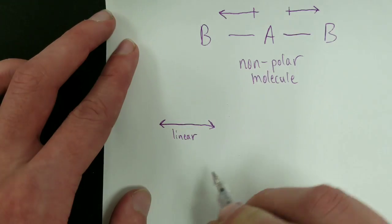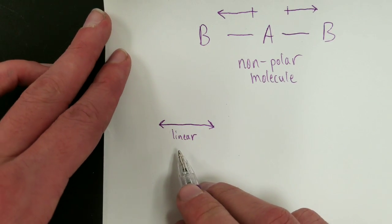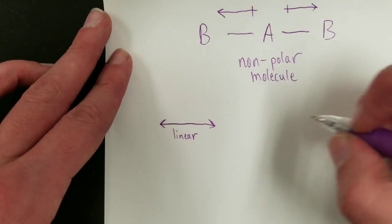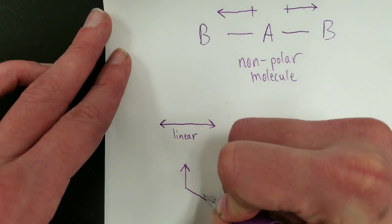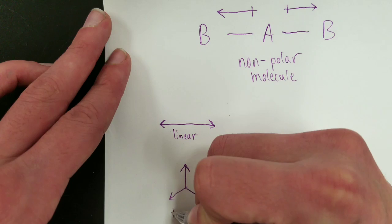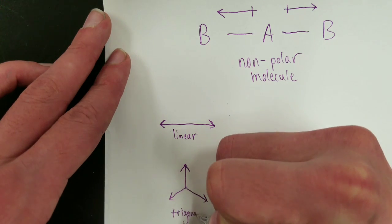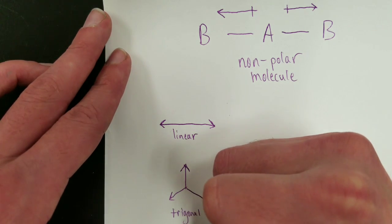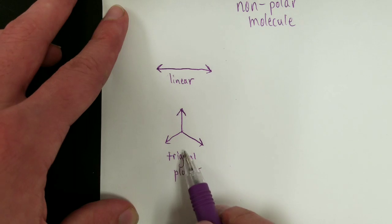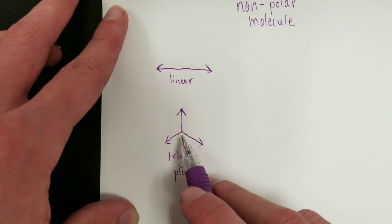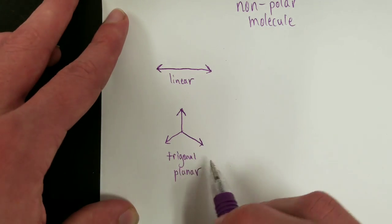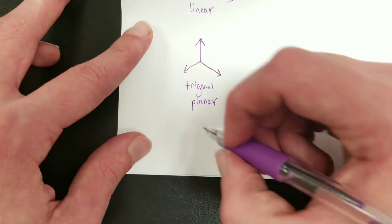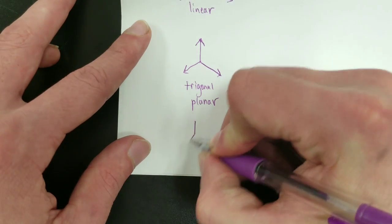A geometry such as this, trigonal planar, also sees the force, potentially, if these are three polar bonds, sees them pull in opposite directions such that they can also cancel.